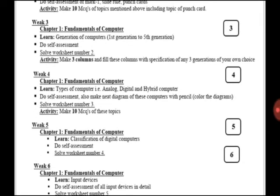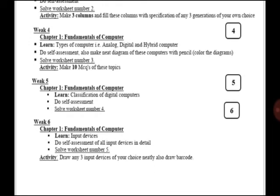In week four, you will learn types of computers - analog, digital, and hybrid computers. You will do self-assessment and make neat diagrams of these computers with pencil. You can also color those diagrams and solve worksheet number three. Also make 10 MCQs of these topics. In week five, you will cover classification of digital computers, do self-assessment, and solve worksheet number four.